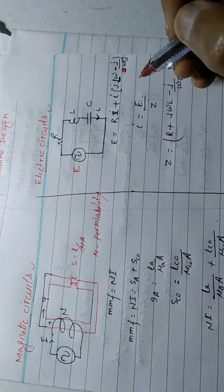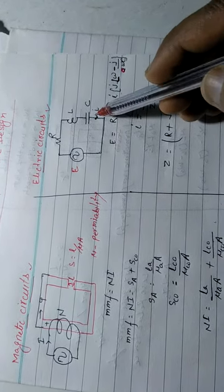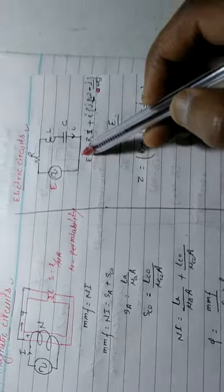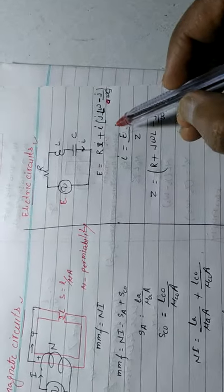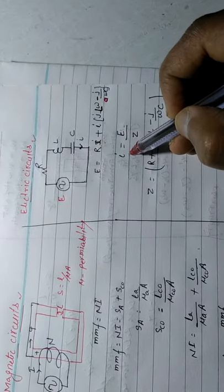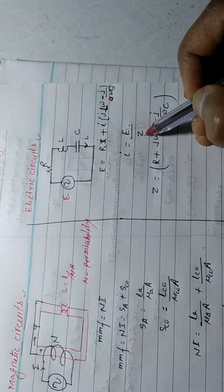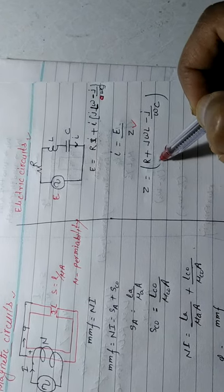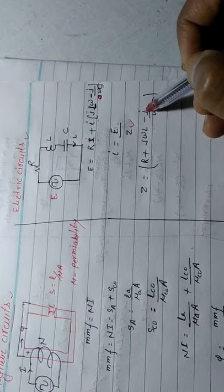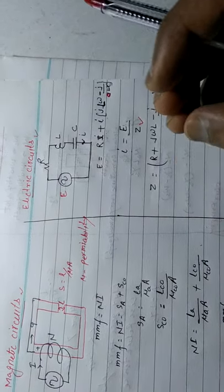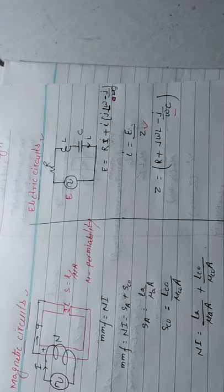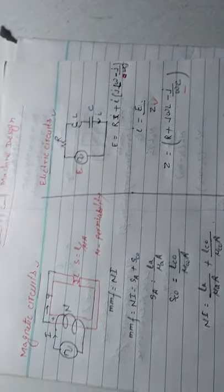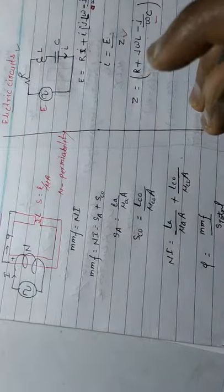Now if you want to calculate the current in this circuit, you can calculate I is equal to E divided by impedance Z, where Z is R plus j·ω·L minus j upon ω·C. These are basic concepts.